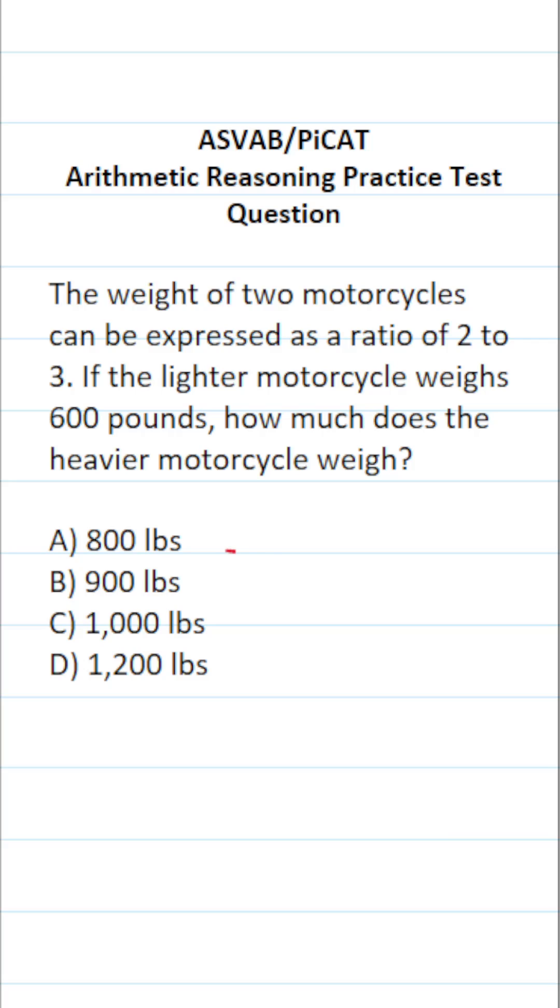We're going to use a proportion to solve this one. More specifically, on the left-hand side of the proportion, we're going to put the ratio of their weights, notably two to three. And as we fill in the right-hand side of this proportion, we have to pay close attention to the fact that this two corresponds to the lighter weight and this three corresponds to the heavier weight.